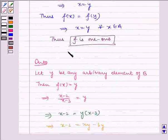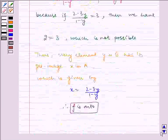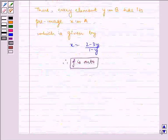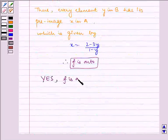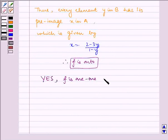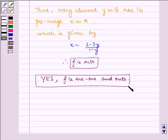f is one-one and f is onto. Therefore, yes, f is one-one and onto. I hope you understood the problem. Bye and have a nice day.